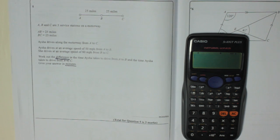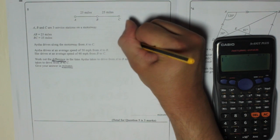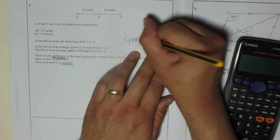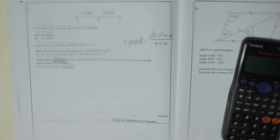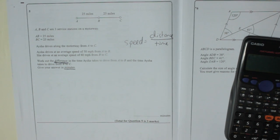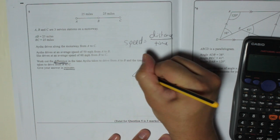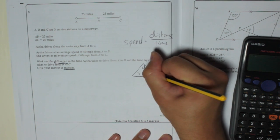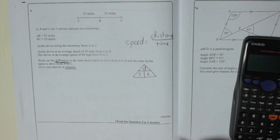So let's work out the times. Now remember that speed is distance over time. You can use that to get a triangle, a formula triangle. Speed is distance over time. We're trying to work out times.